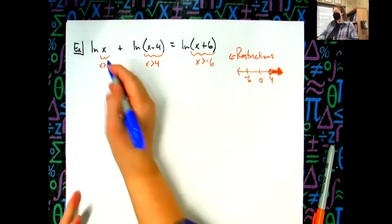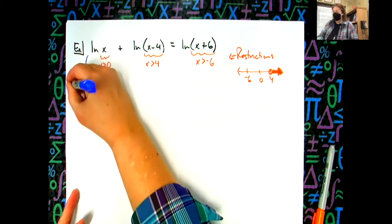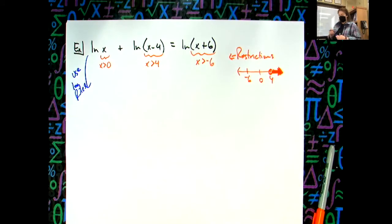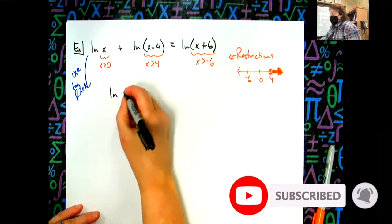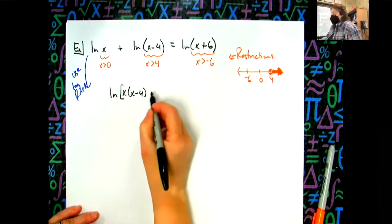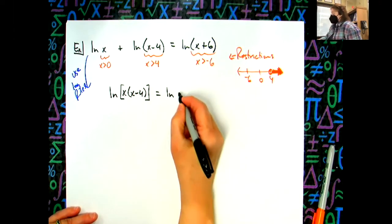Yep, over here on this left hand side I'm adding a couple logs, so I'm going to use my log rules. I'm going to compress on that left hand side, I'm going to make it into a single log. So natural log of an x times an x minus four. And if you want those square brackets around there that's fine. On the right hand side I'm not going to do anything to that.